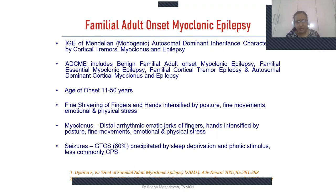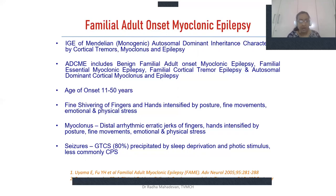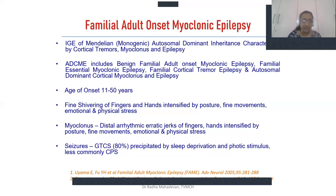A mild introduction about the disease: it is familial adult onset myoclonic epilepsy, also called autosomal dominant cortical tremor myoclonus and epilepsy. The disease is of autosomal dominant inheritance with a high degree of penetrance. The main characteristic trio is cortical tremors, myoclonic jerks, and sometimes generalized tonic clonic seizures. Not all patients have all three components. It goes by multiple names including benign adult onset myoclonic epilepsy and familial essential myoclonic epilepsy, and goes by different names in different countries.